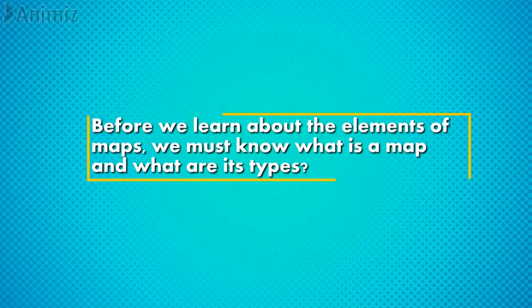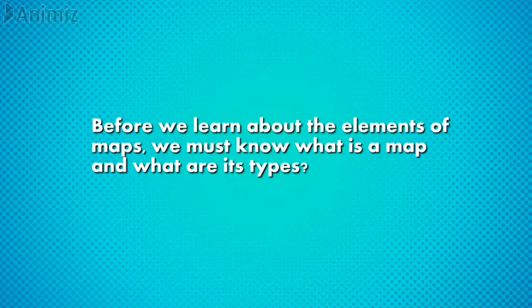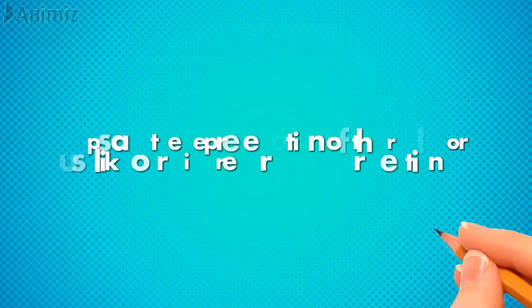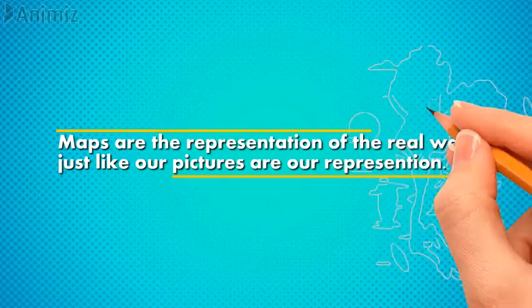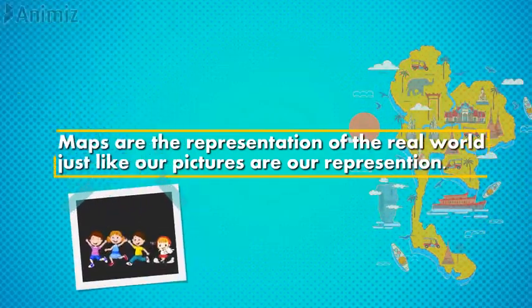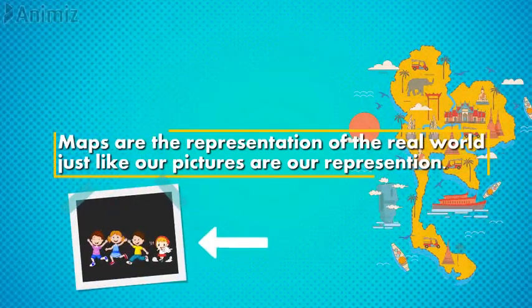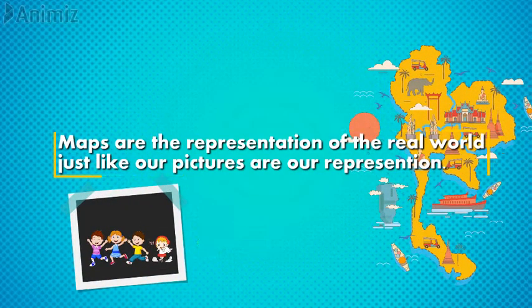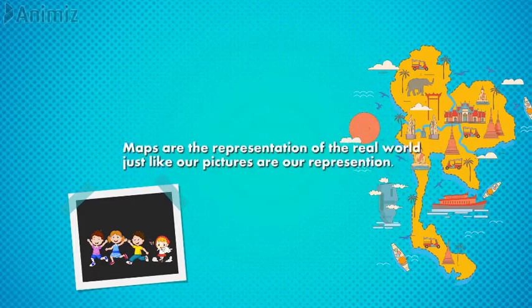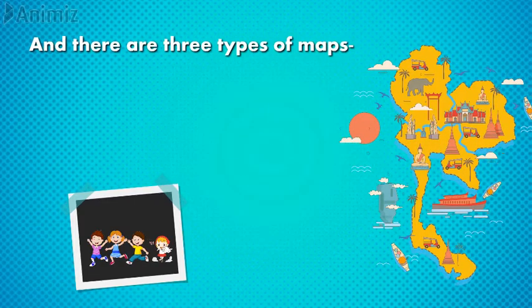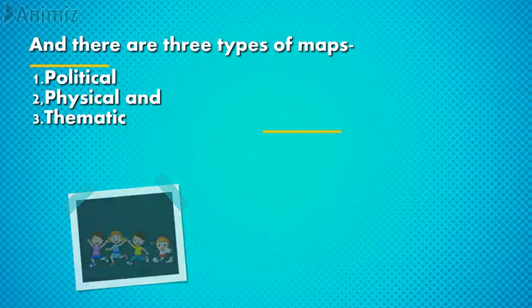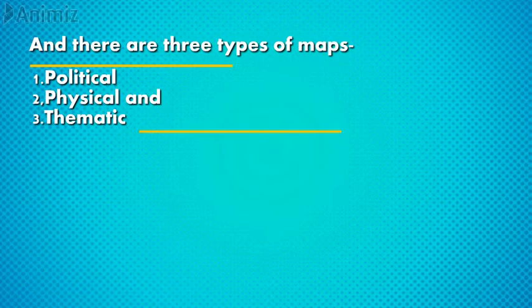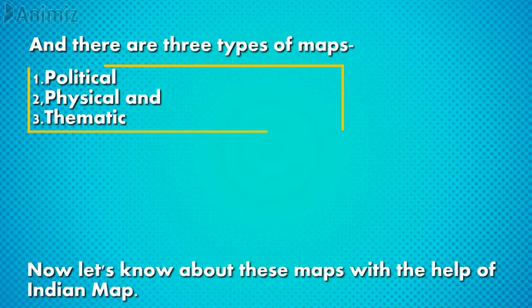Before we learn about the elements of maps, we must know what a map is and what are its types. Maps are the representation of the real world, just like our pictures are our representation. There are three types of maps: political, physical, and thematic.